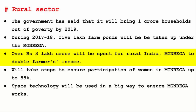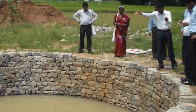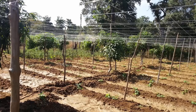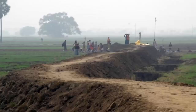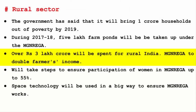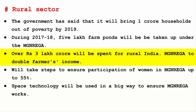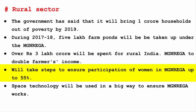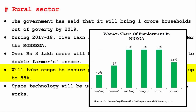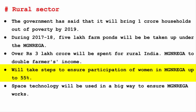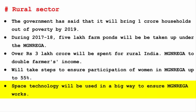Over Rs. 3 lakh crore will be spent for rural India. MGNREGA aims to double farmers' income by addressing optimal utilization of water resources, creating new irrigation infrastructure, conserving soil fertility with balanced use of fertilizer, and providing connectivity from farm to market. The government has also said it will take steps to ensure participation of women in MGNREGA up to 55%. Currently, Puducherry tops the list with 85% women participation, and Andhra Pradesh has 54%. Space technology will be used in a big way to ensure MGNREGA works effectively.